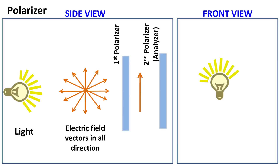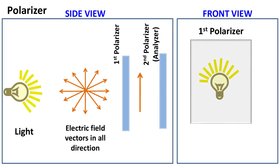First, let's talk about polarizers. Light is made up of electromagnetic radiation, and the electromagnetic radiation is made up of electric and magnetic field vectors. To make things easy, we will consider only the electric field vectors. Unpolarized light has electric field vectors oscillating in all directions. When this light passes through the polarizer, only the electric field vector oriented in a particular direction passes through, whereas the rest of the electric field vectors are blocked.